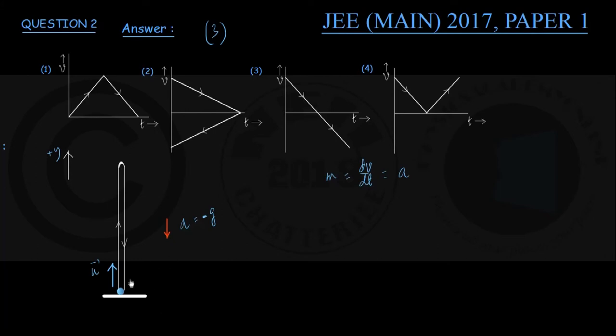If for a body thrown vertically upwards acceleration is minus g, a negative constant value, let me write this here: a equals minus g. So let us look for the graph among the four where the acceleration, or rather the slope of the graph, remains constant at a negative value, and the obvious choice is option number 3.